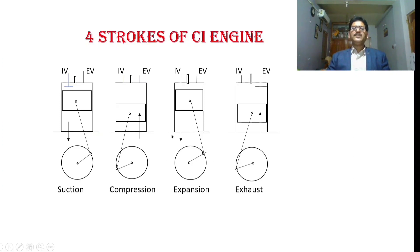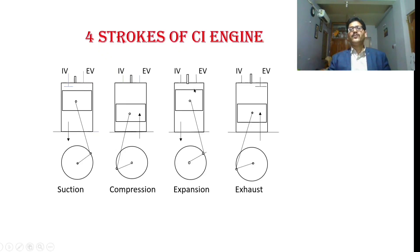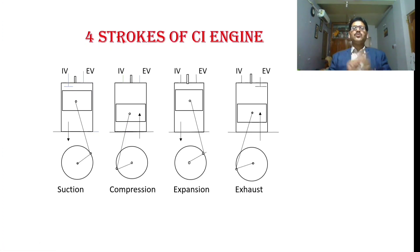The next stroke is the expansion stroke. During the expansion stroke, the inlet as well as the exhaust valves are in the closed position. The piston moves from TDC to BDC due to the combustion of the air-fuel mixture. A huge amount of thermal and pressure energy is developed, which pushes the piston from TDC to BDC. The entire power is developed during the expansion stroke, which is why we also call it the power stroke or working stroke.